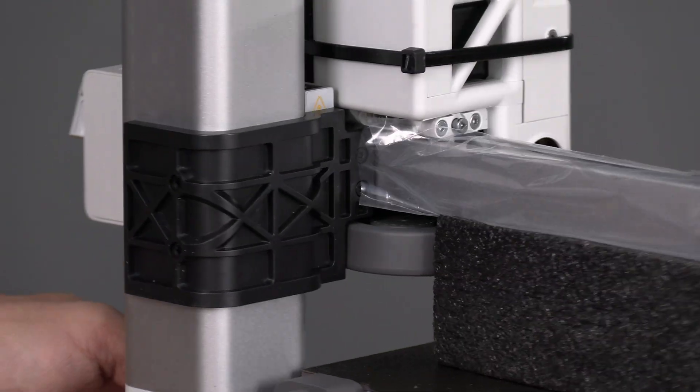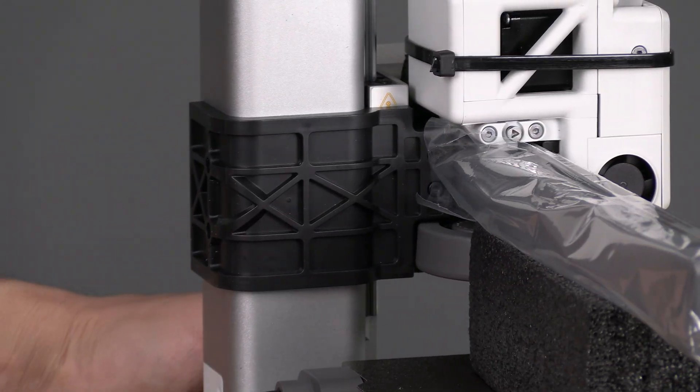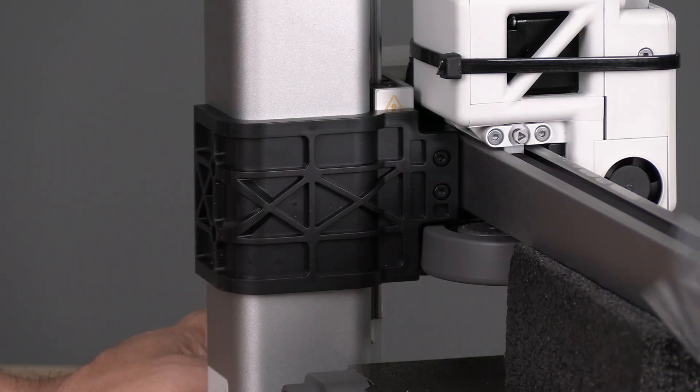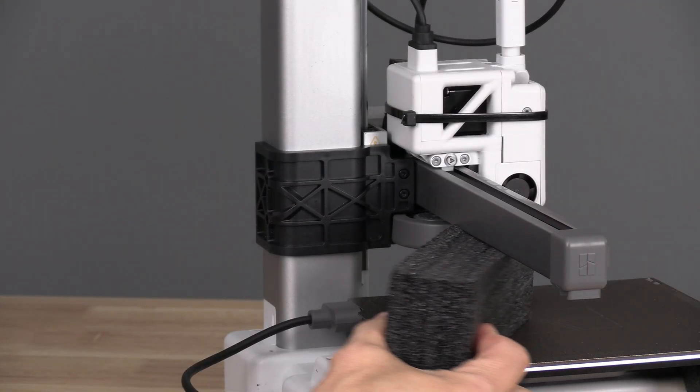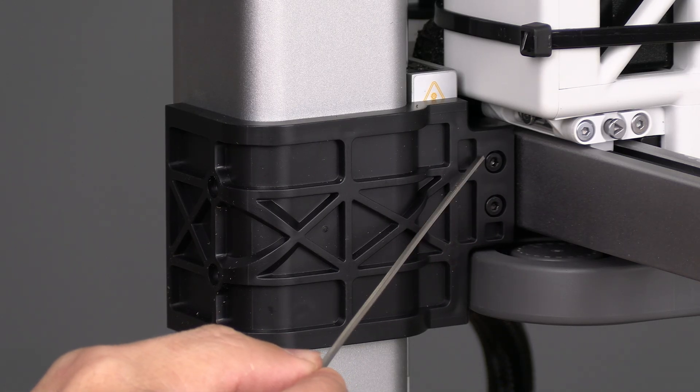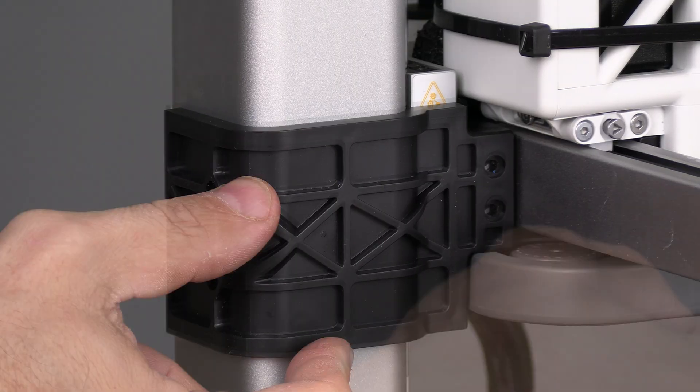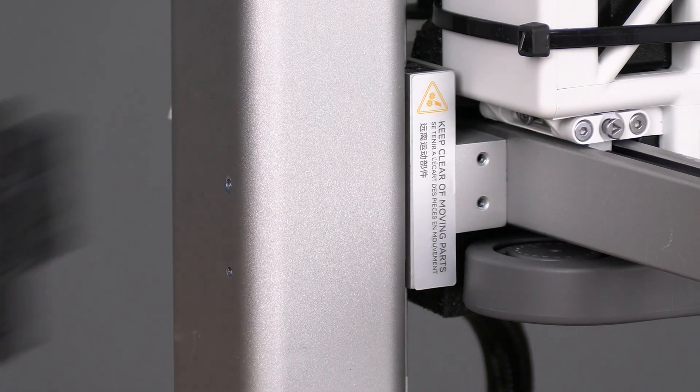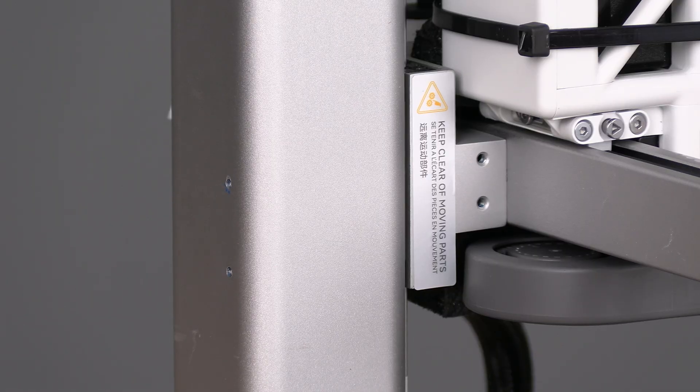Look to the side of the printer. Remove this plastic baggie. Remove this piece of foam. And remove this screw and this screw. With both these screws removed, this piece will easily come off. Remove and discard it.